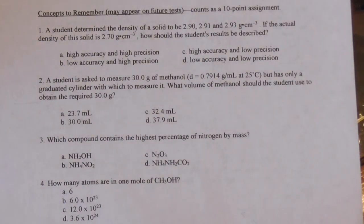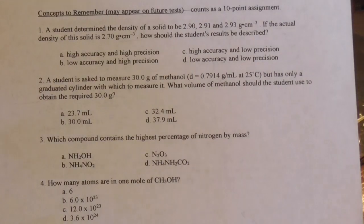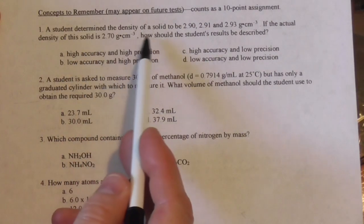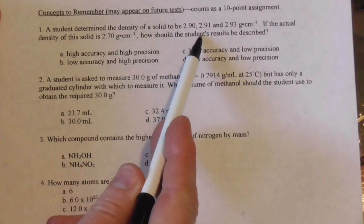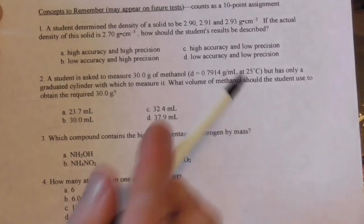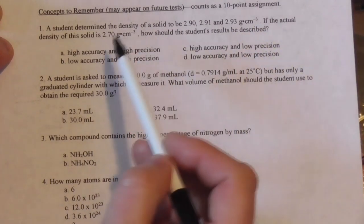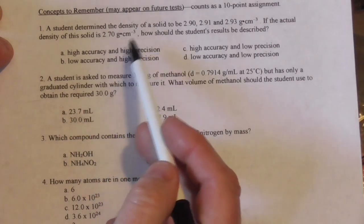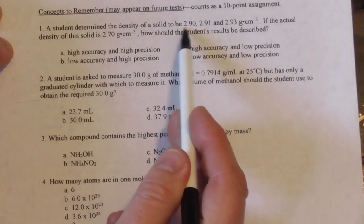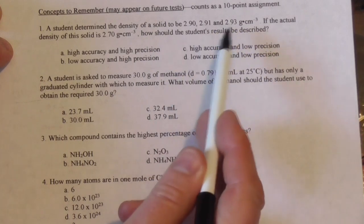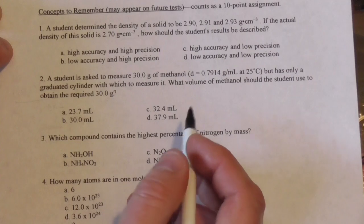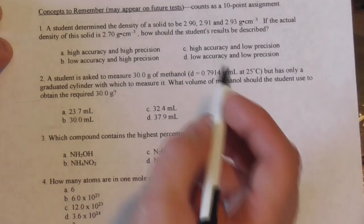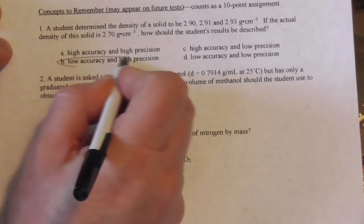A student determined the density of a solid to be 2.90, 2.91, and 2.93 — very close to each other, so very precise. But the actual value is 2.70, so not very accurate. These are high precision but low accuracy. Letter B.